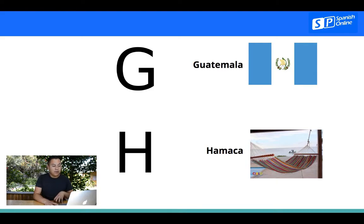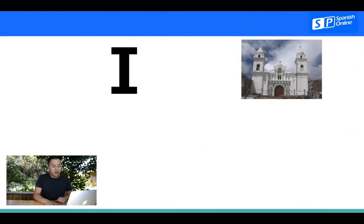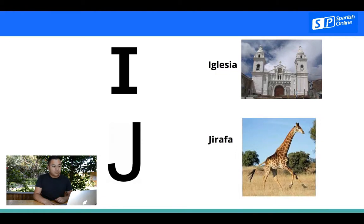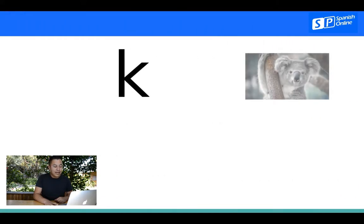The second thing is that, okay, we're going to continue with the I, iglesia, jirafa, k, de koala, l, de luna.